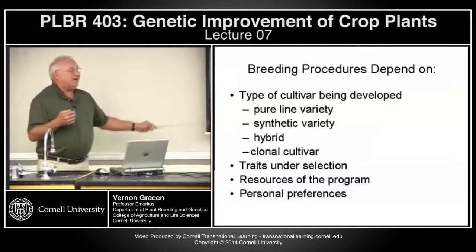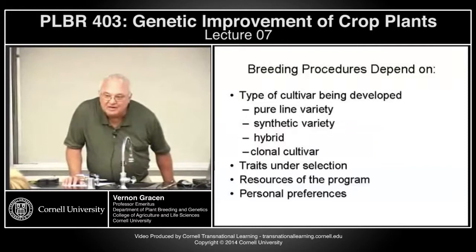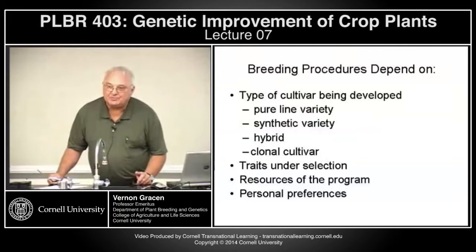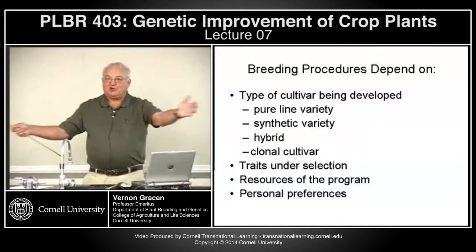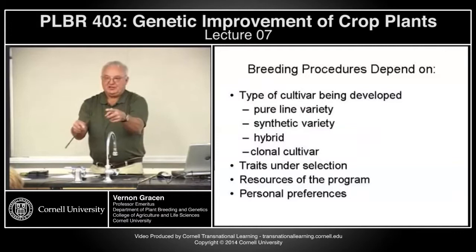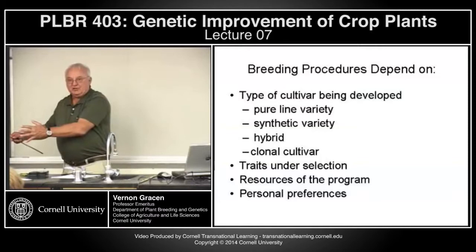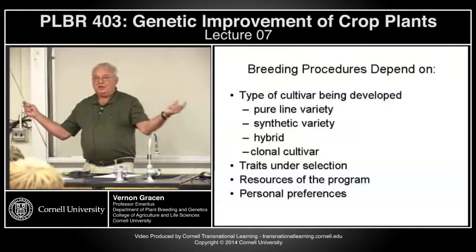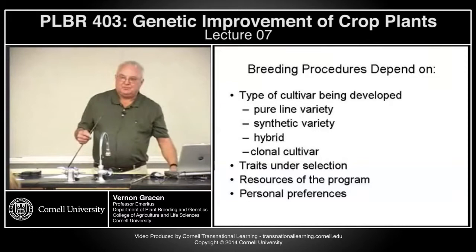A synthetic variety is used in open-pollinated crops where you develop a series of cross-pollinated individuals and select the superior performing ones. If you self those, you get all sorts of bad effects. So you take a series of cross-pollinated individuals, put them in isolation so they will only inter-pollinate each other and not undesirable plants. You synthetically blend different varieties and mix that seed together for two or three generations to get enough for commercial release.